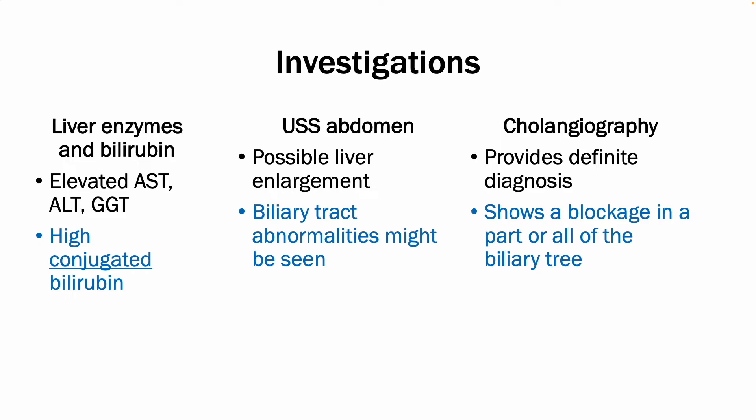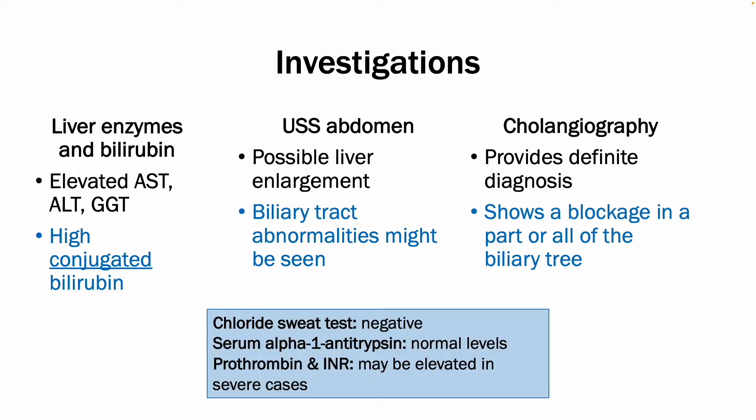Cholangiography provides the definitive diagnosis and would directly show the blockage in part or all of the biliary tree. It is also important to conduct tests to exclude other conditions, such as a sweat chloride test to look for cystic fibrosis, serum alpha-1 antitrypsin levels to check for A1AT deficiency, as well as prothrombin time, which may be elevated as some patients present with easy bruising.